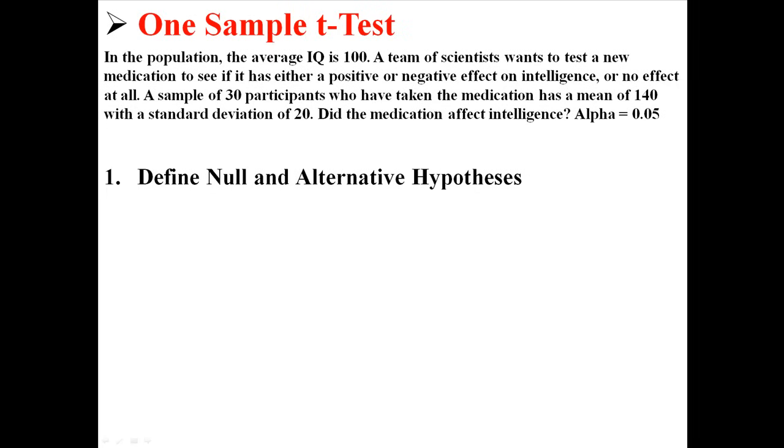First, we're going to define our hypotheses. In this case, H0, our null hypothesis, is that the mean is equal to 100 because in the population the average IQ is 100. So that's what we would expect the mean of this sample to be. H1, our alternative hypothesis, is that the mean is not equal to 100 because we're testing to see if it's any different from the expected value of 100.